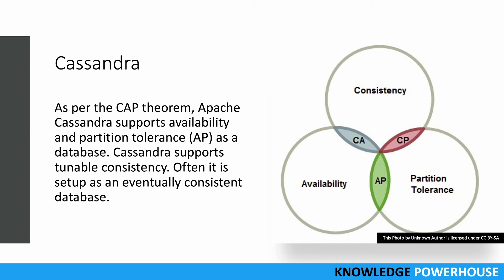This brings us back to the CAP theorem — consistency, availability, and partition tolerance. Cassandra provides availability and partition tolerance; it supports AP. It provides high availability and partition tolerance in a distributed system, and the consistency part is tunable. You can have strong consistency, but then availability may get reduced. So often we set up Cassandra as an eventually consistent database, and within eventual consistency, you have tunable consistency — you can increase or decrease that consistency level.